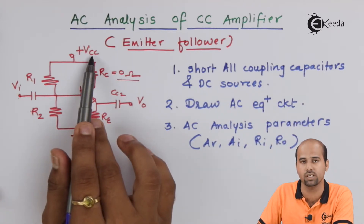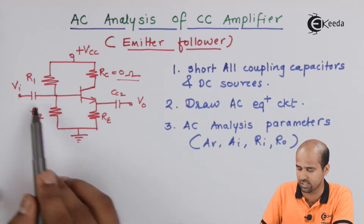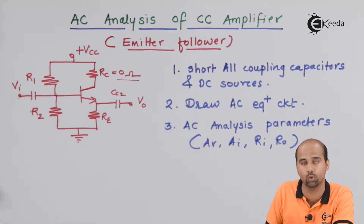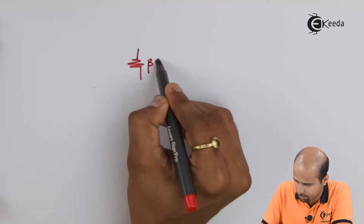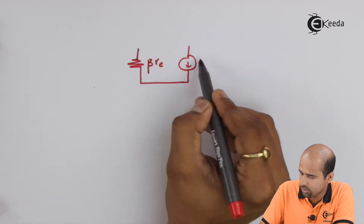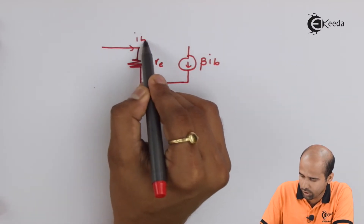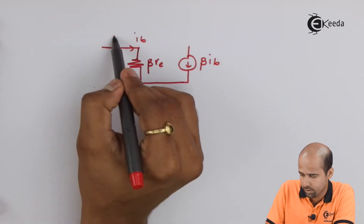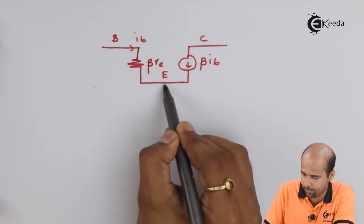We place Vcc equal to zero, connected to ground. All coupling capacitors CC1 and CC2 are shorted. We then draw the BJT prototype using the RE model. In this model we have beta·RE, the controlled current source beta·IB, and the base current IB flowing in. The terminals are base, collector, and emitter.